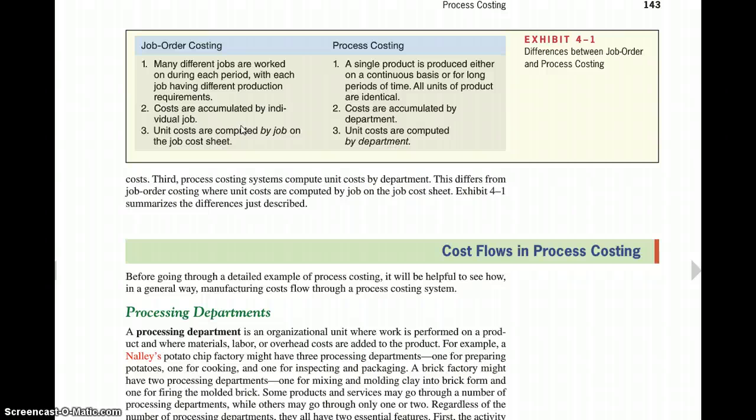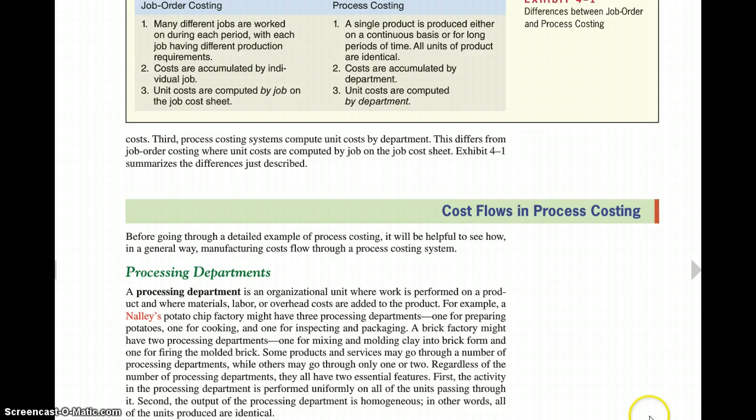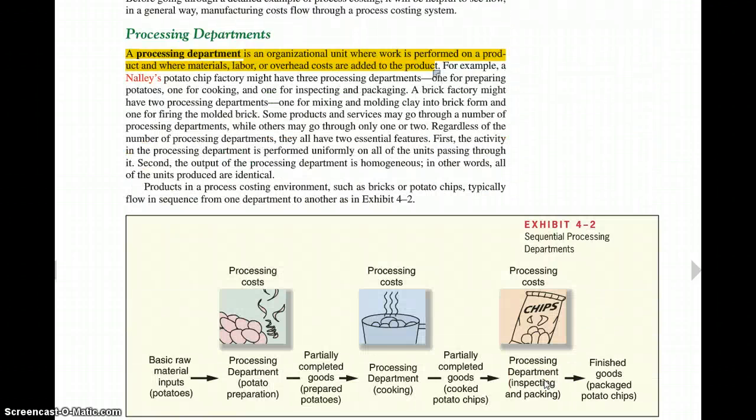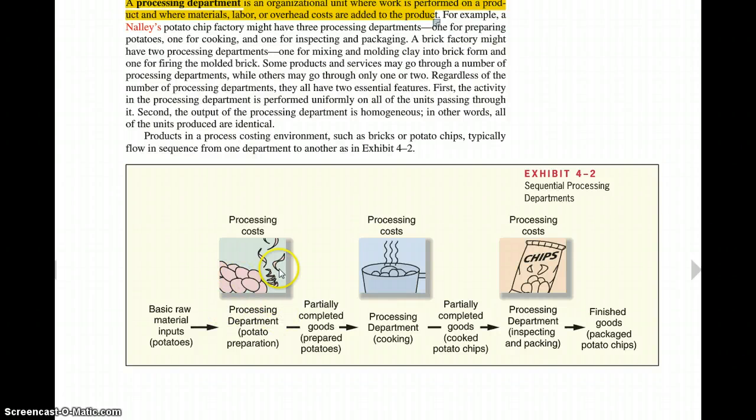A processing department is an organizational unit where work is performed on a product where materials, labor, or overhead costs are added to the product. So it's a processing unit, and it would have things added to the costs. They give you an example here of a brick, and they also give you some examples of potato chips. So we start with our raw materials, the basic potato. We process and clean the potatoes, and then we take them to the processing department for cooking. As you can see, the potato is cooking. And then they get cooked, and they take to the processing department inspecting and packing, where we put our chips into a bag. And when they're finished goods, they're bags of potato chips on the shelves. But this potato preparation, cooking, and inspecting and packaging all represent different processing departments.